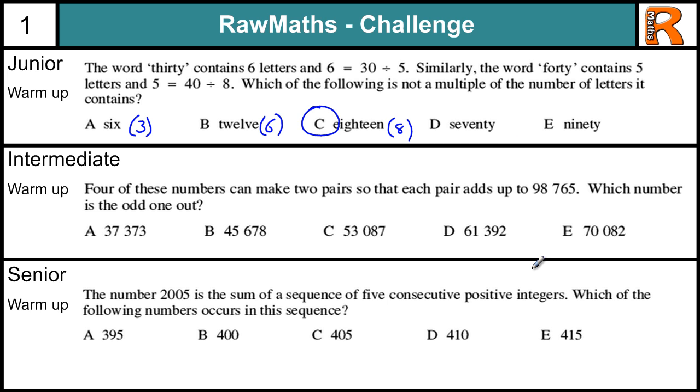Okay, the intermediate warm-up. Four of these numbers can make two pairs so each pair adds up to 98,765. Which number is the odd one out? Now, you might be tempted just to go straight and start adding, but there's often a quick way to eliminate some of the possibilities.